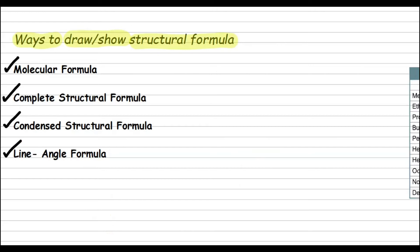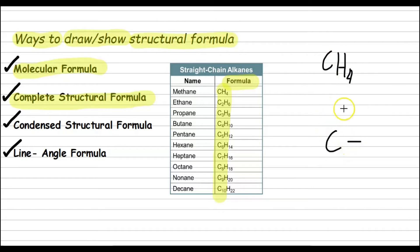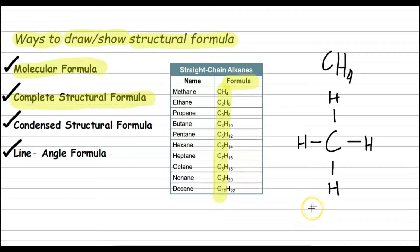The molecular formula of the first 10 alkanes is given in this table. For the complete structural formula, let's try methane, CH4. Because carbon has four valence electrons, a carbon atom always forms four covalent bonds. So this is the complete structural formula of methane.